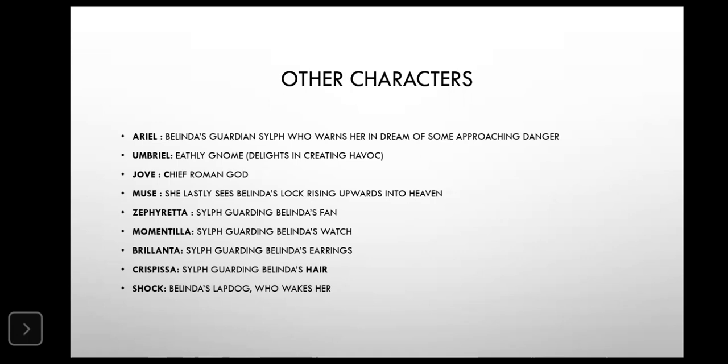Brillante, through her name suggesting luminousness or spark, is the sylph guiding Belinda's shining earrings. The fourth one is Crispissa, who is the guardian sylph of Belinda's hair. These were special duties assigned by Ariel, but towards the end they all fail.